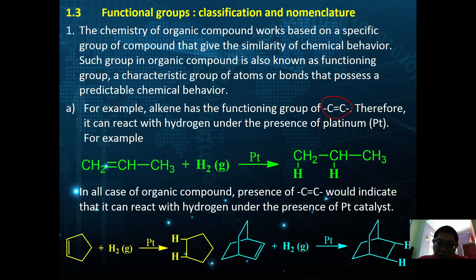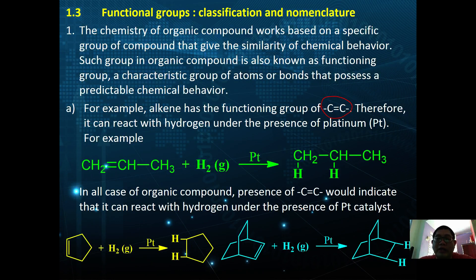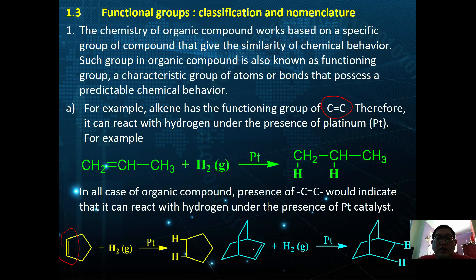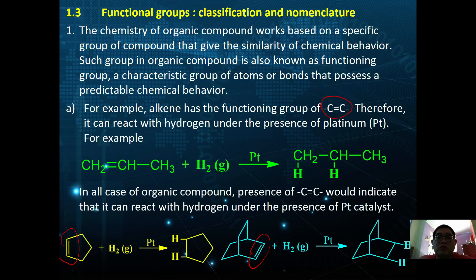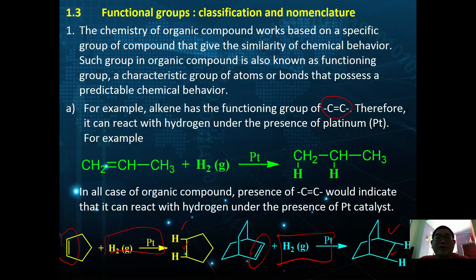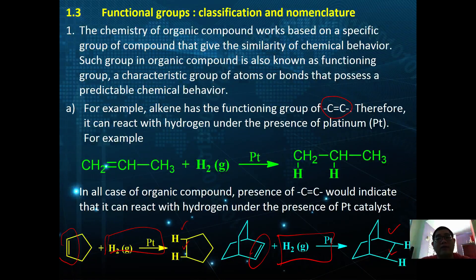For example, if propene reacts with hydrogen under platinum as catalyst, hydrogenation takes place. So if any organic compound possesses the same functional group of C double bond C, they will behave chemically the same as any alkene. The hydrogenation will still take place regardless of the type of organic compound, as long as they contain a C double bond C. Throughout the functional groups present inside organic compounds, we can predict the chemical behavior of that functional group.